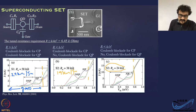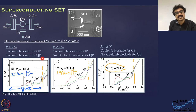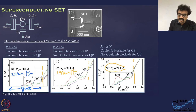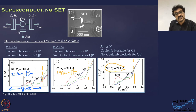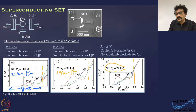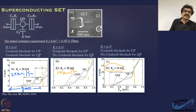In nutshell: resistance greater than h/e² gives you charging effects of both quasiparticles and Cooper pairs. Resistance less than h/e² gives you Coulomb blockade only for Cooper pairs or features involving Cooper pair tunneling, but no Coulomb blockade for quasiparticles.